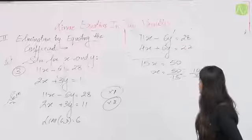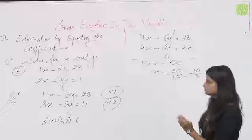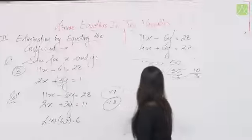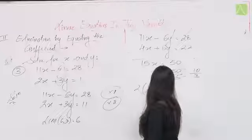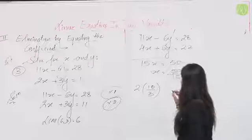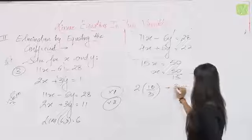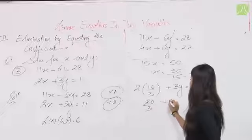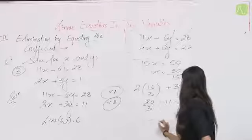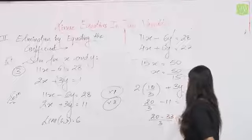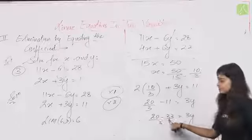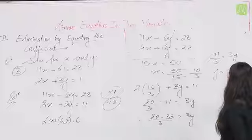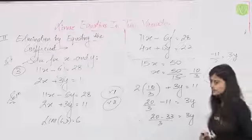x की value निकाली: 10/3। अब y की value निकालनी है। Second equation में put करते हैं: 2(10/3) + 3y = 11, so 20/3 + 3y = 11, so 3y = 11 − 20/3 = 33/3 − 20/3 = 13/3। Wait — 20 − 33 = −13, so 3y = −13/3, so y = −13/9।